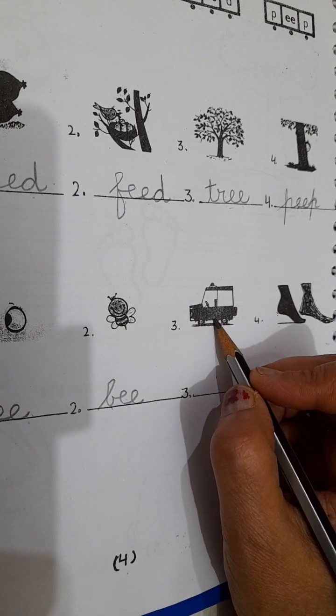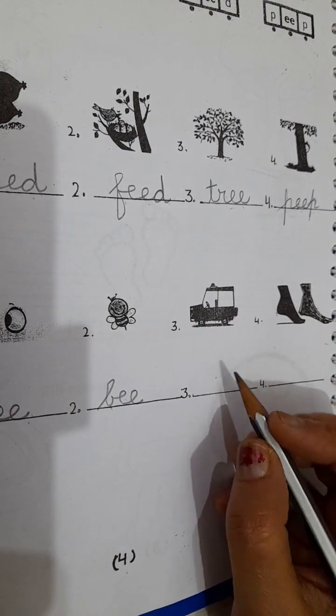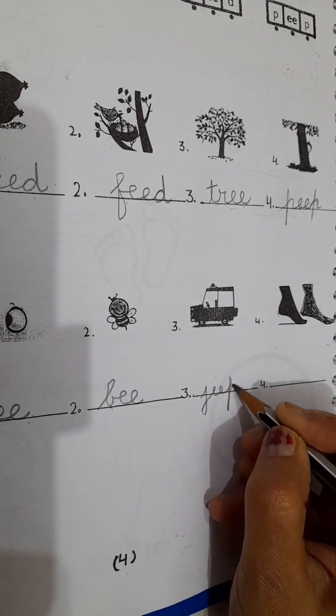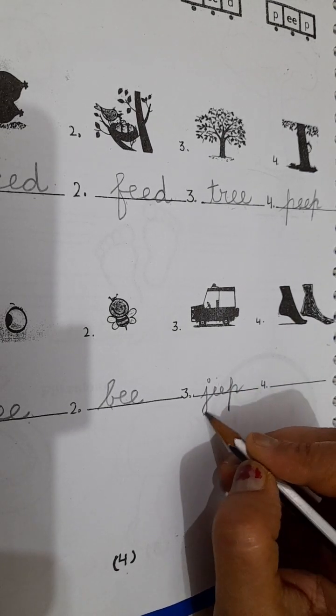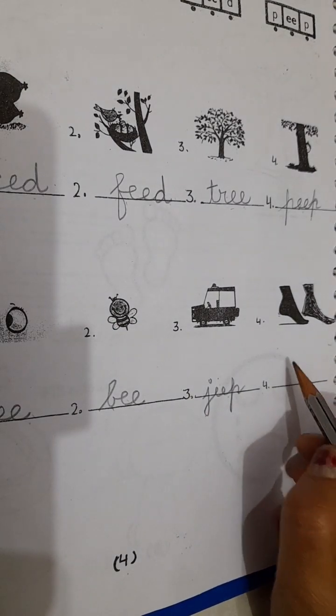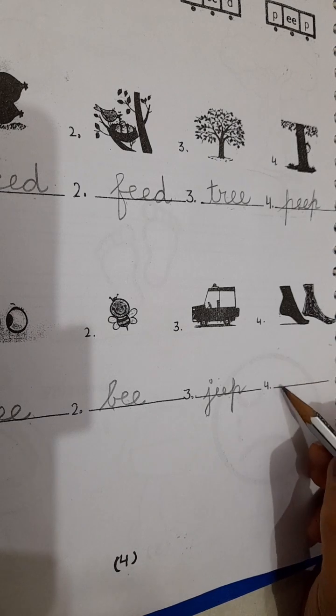And what vehicle is this? Jeep. Jeep. J, E, E, P, jeep. J, E, E, P, jeep. And the last word is...